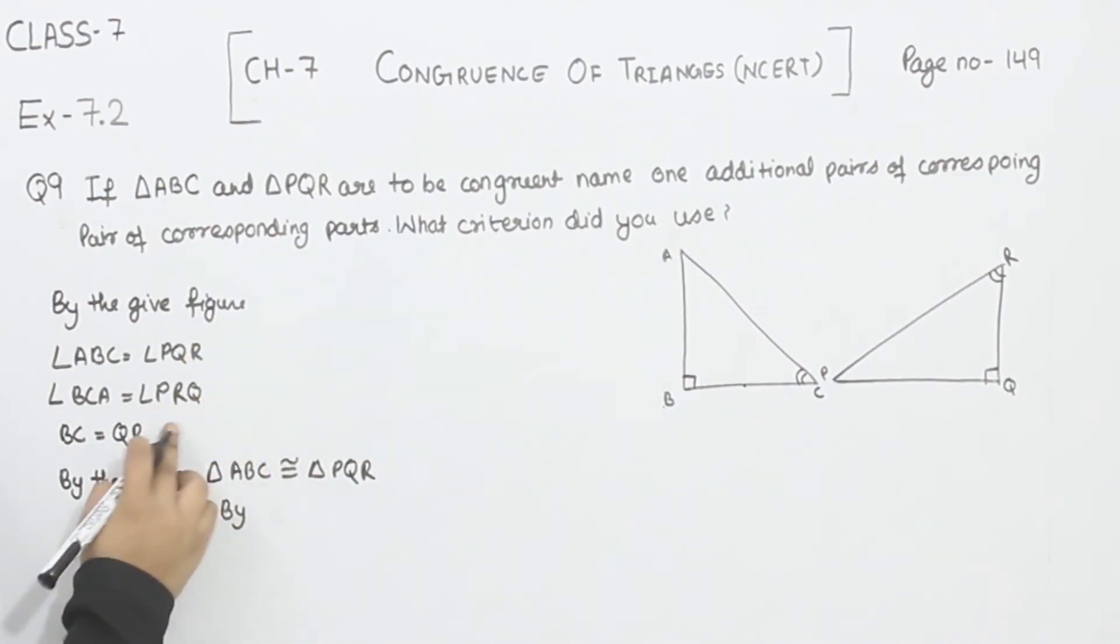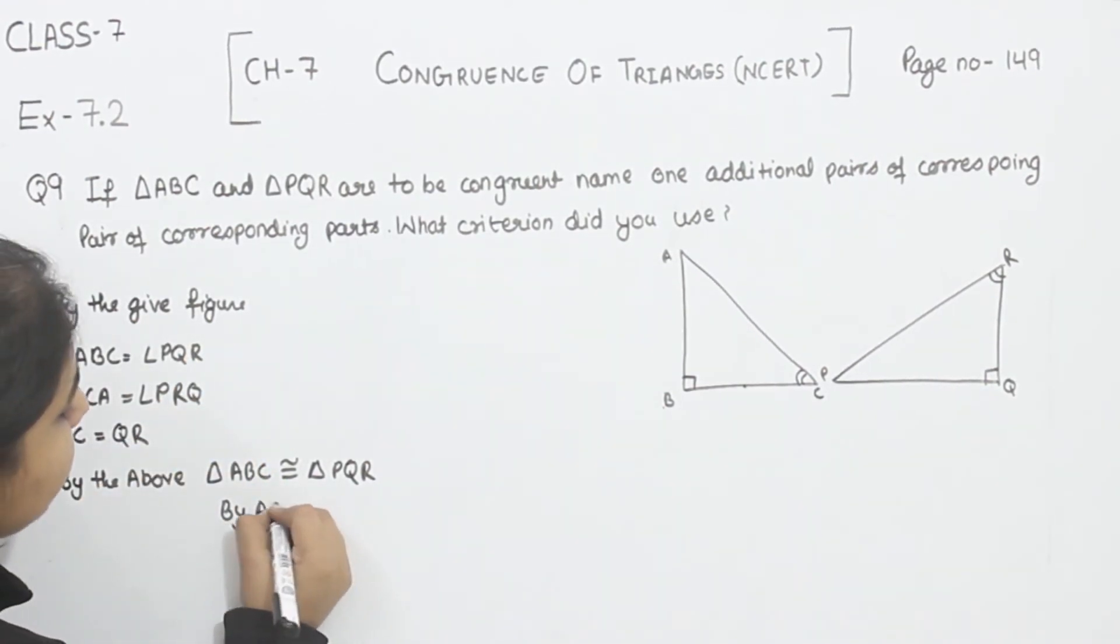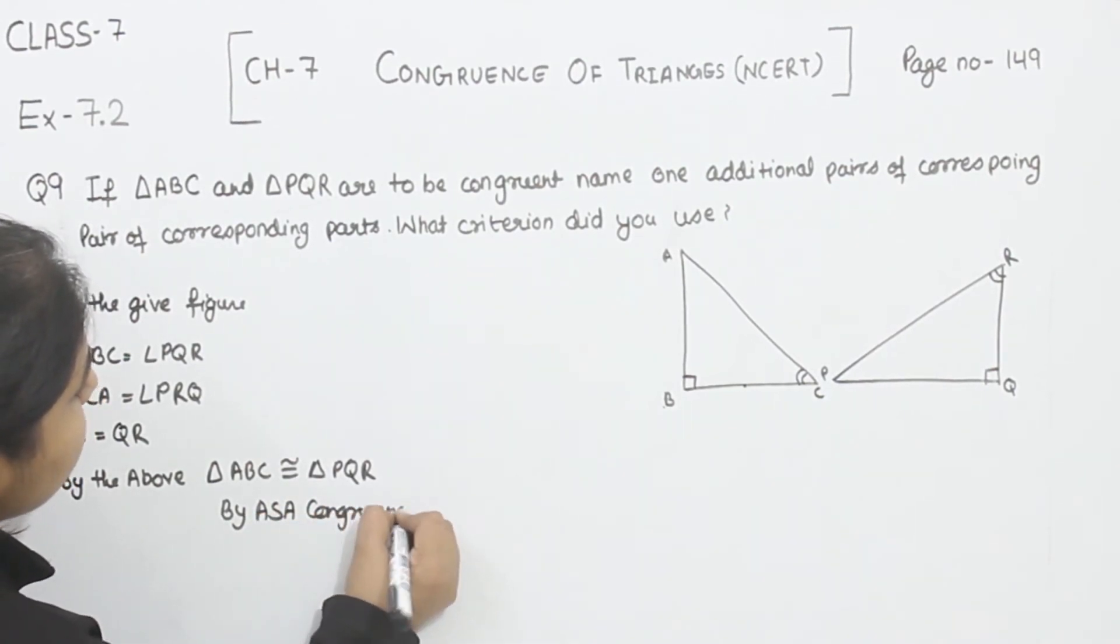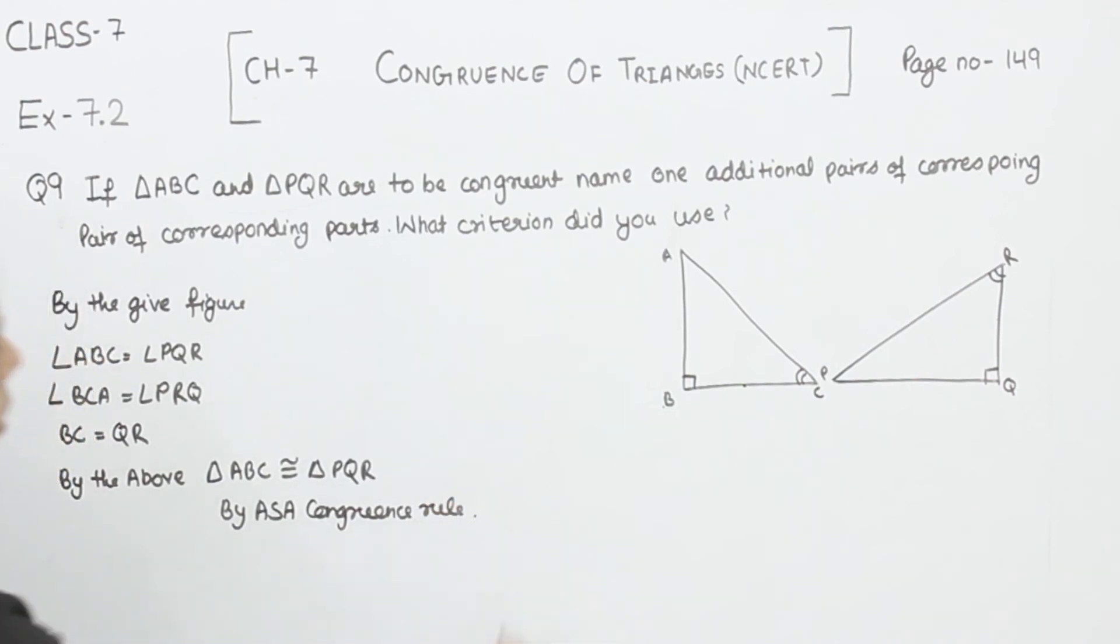By the above, triangle ABC is congruent to triangle PQR. Now we are having two angles as equal and one side, by the angle-side-angle congruence rule. So ABC is congruent to triangle PQR. With this, we have completed question number 9. In the next video, we are going to start with question number 10.